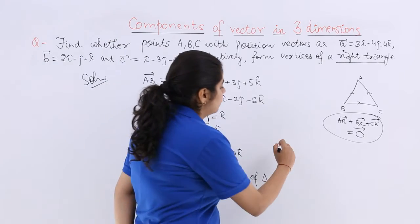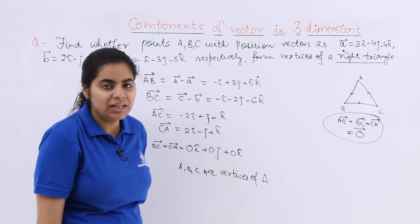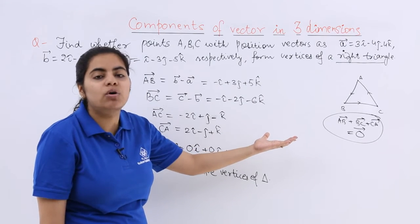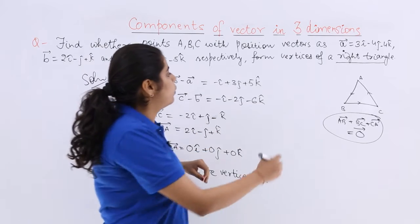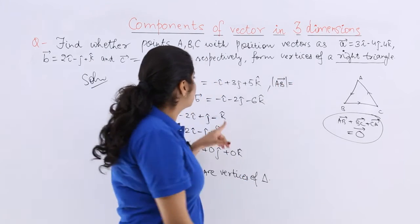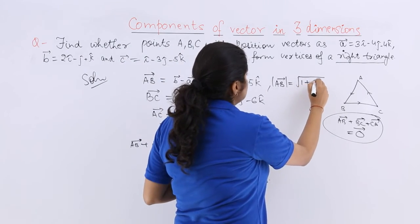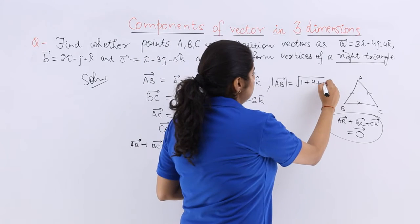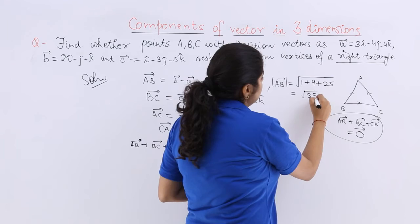Let me talk about the right triangle. So for right angle triangle there should be Pythagoras theorem that is followed. Because if Pythagoras theorem is followed only then we can say this is a right triangle. So let me find out what is AB magnitude. So it is under root 1 square plus 3 square which is 9 plus 5 square which is 25. So it is root 35.